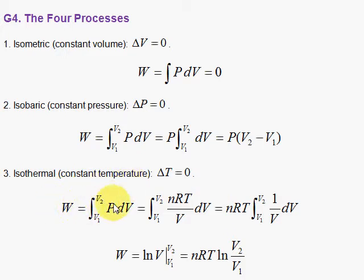We integrate PDV, and since we're going to use the ideal gas law, we replace the P with nRT over V. T is constant, we pull that out with the other constants, we integrate one over V, and we get the natural logarithm.